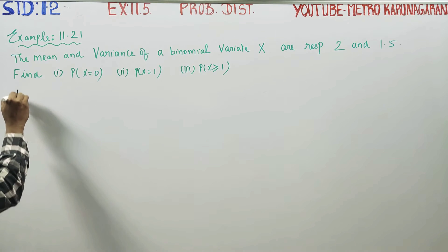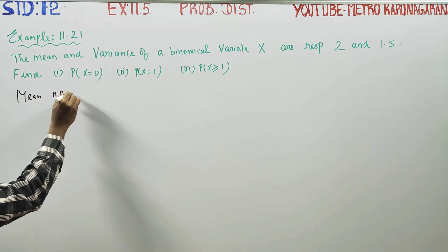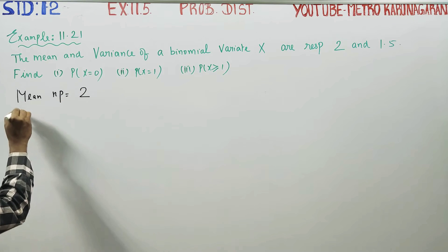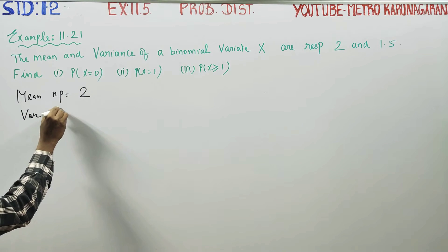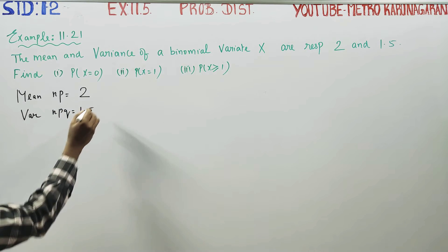of a binomial variate are 2 and 1.5. Mean, mean is n into p, n into p is equal to 2. Variance, that is npq binomial distribution 1.5.